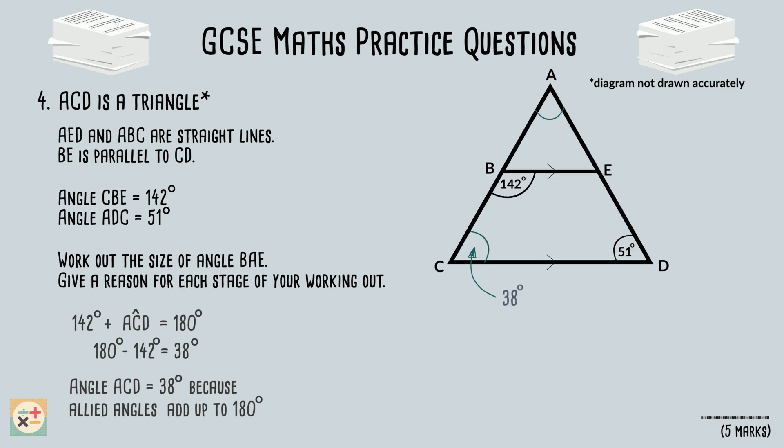Now we know the size of angle ACD, we can work out the answer to the question, because angles CAD and angle BAE form the same angle. CAD is the angle if we are referring to the larger triangle, and BAE if we are referring to the smaller triangle. We know that angles in a triangle add up to 180 degrees, and we are already given the size of the angle ADC, which is 51 degrees. So we can subtract 51 degrees, and 38 degrees, from 180 to find the remaining angle of the triangle.